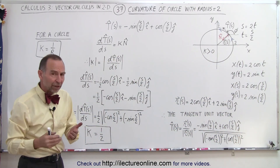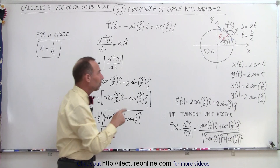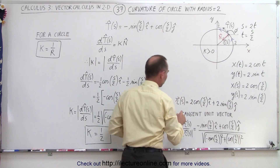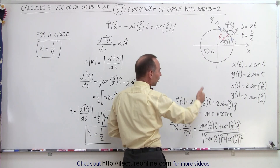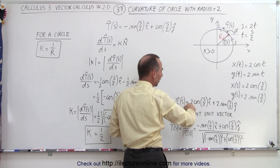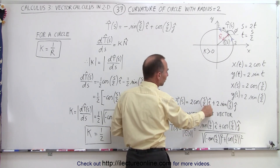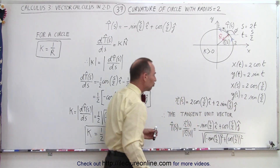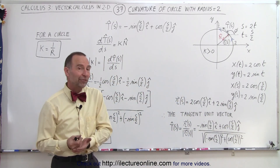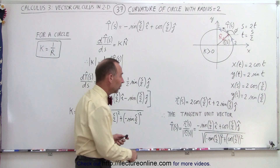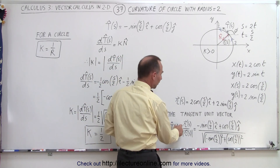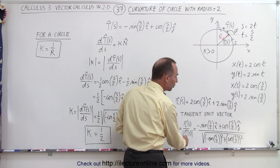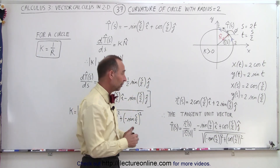So now we can express the position vector r from the origin to the edge of the circle in terms of the arc length s as 2 times the cosine of s over 2 in the i-direction plus 2 times the sine of s over 2 in the j-direction. Then, if we want to find the unit tangent vector, we know that's equal to the derivative of the position vector divided by the magnitude of the derivative of the position vector.